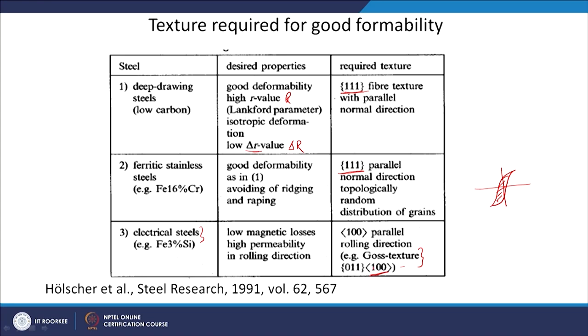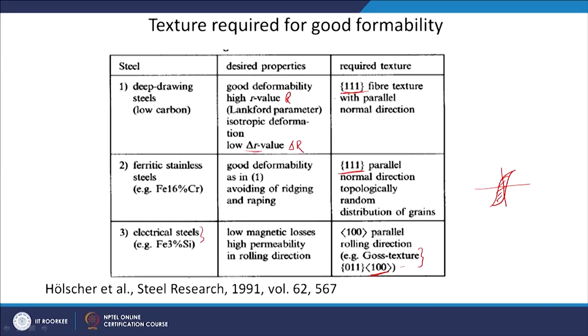For reducing hysteresis losses, a particular texture component is required — called Gauss texture. If you have a Gauss texture in the plane of the transformer strips, this particular direction is the easy magnetization and demagnetization direction, so hysteresis losses will be low. The texture requirement is 100 parallel to rolling direction — for example, Gauss texture, which has 100 parallel to rolling direction. However, whatever texture is required for electrical steel is usually not good for formability, and whatever is required for formability is not good for electrical steels.